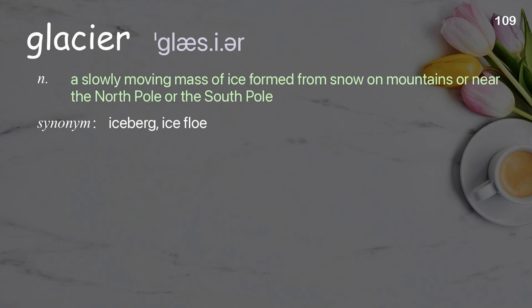Glacier. A large mass of ice that moves slowly, formed from snow on mountains or near the North Pole or the South Pole.